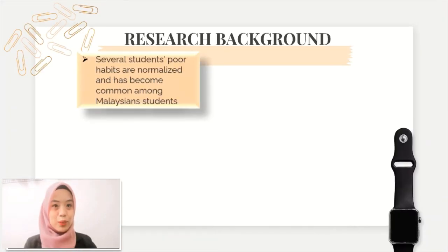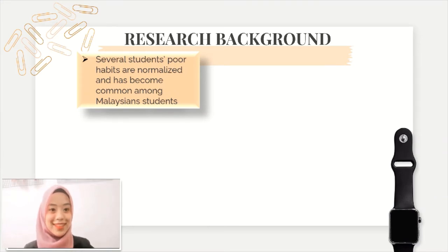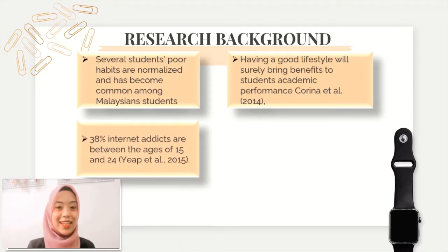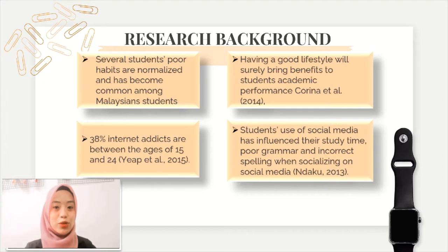Several students' poor habits are normalized and have become common among Malaysian students. Having a good lifestyle will definitely bring benefits towards students' academic performance. The majority of internet addicts in Malaysia are between the age of 15 to 24 years old, which represent 38%. Students' use of social media has influenced their study time, poor grammar and incorrect spelling when socializing on social media.